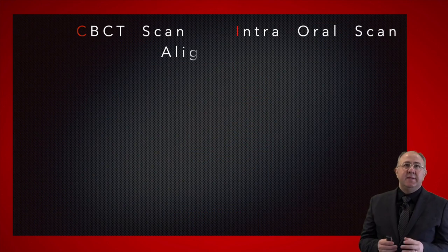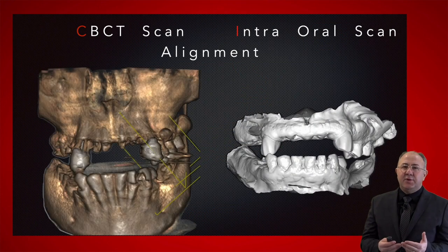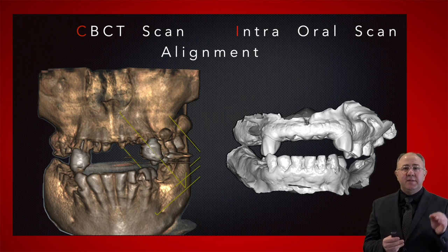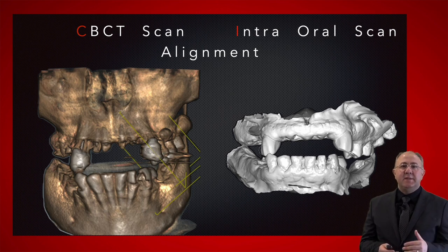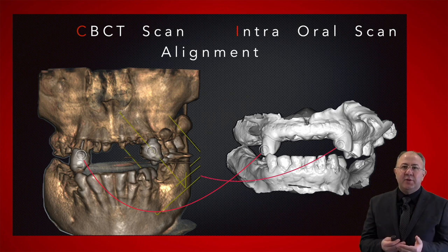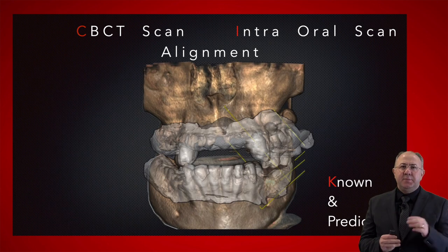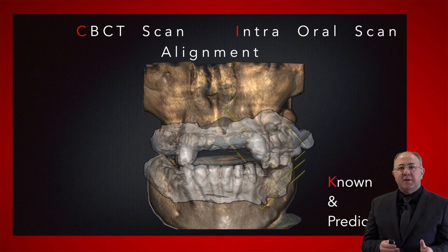The known method today to align an intraoral scan and a CBCT scan is very simple. You find reference points on teeth from both the CBCT scan and the intraoral scan, and the software will merge the two data together. The beauty of this process is that the software allows you to verify that the merge is accurate.